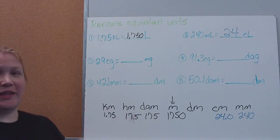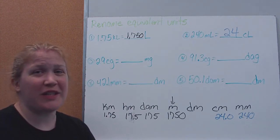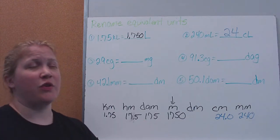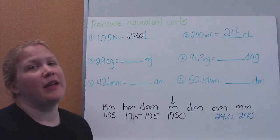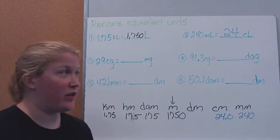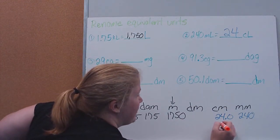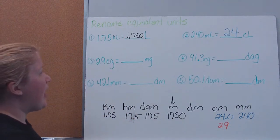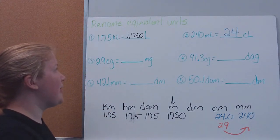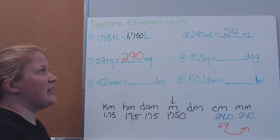Do you see how memorizing these prefixes makes it so much easier? Count your spaces, move your decimal — nice and simple. So much easier than remembering 12 inches in a foot, 3 feet in a yard, or 5,280 feet in a mile. Next: 29 centigrams converted to milligrams. Moving one spot to the right, the decimal moves one spot right, and I need to add a zero placeholder. That gives us 290 milligrams.